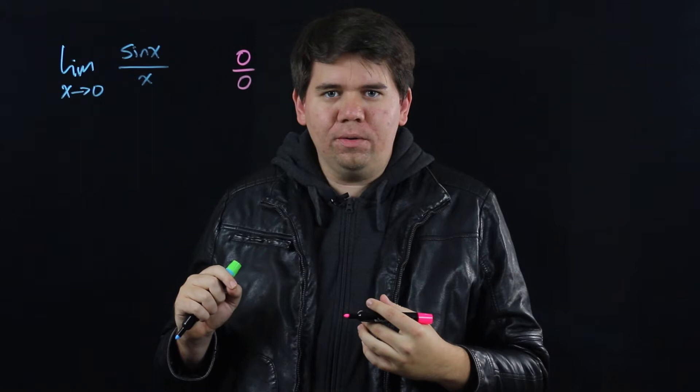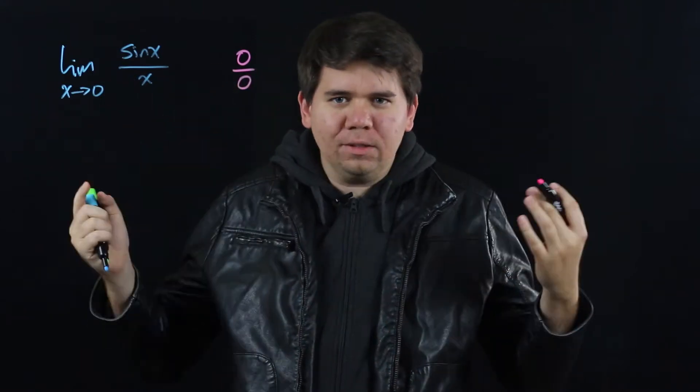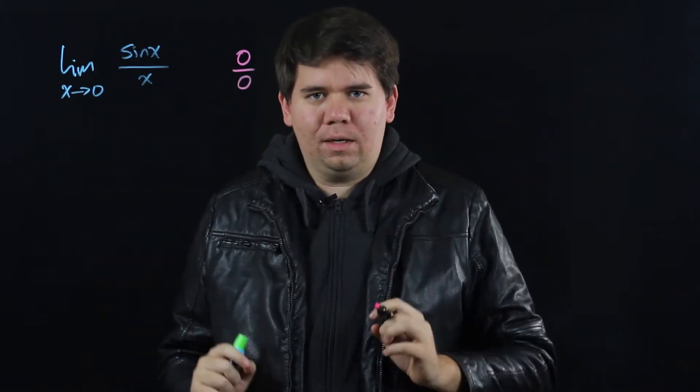You can't divide by 0. With 0 over 0, do they cancel? Is it a 1? Is it something else? It's not clear.